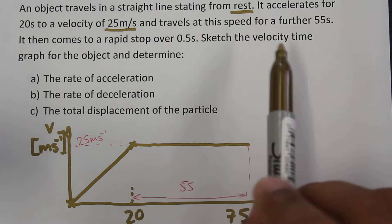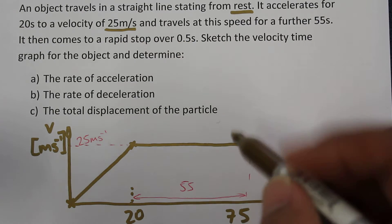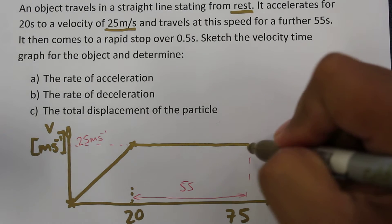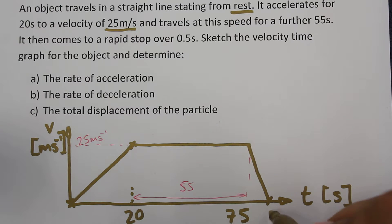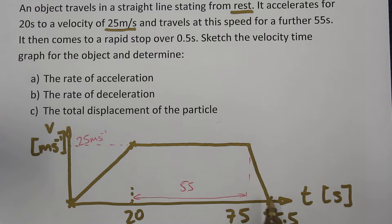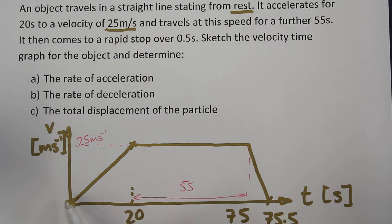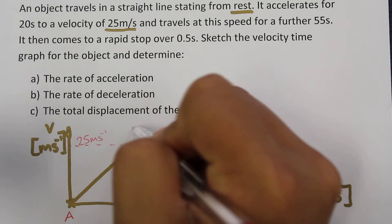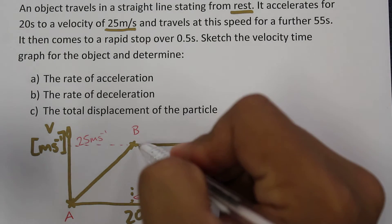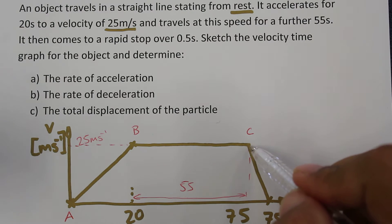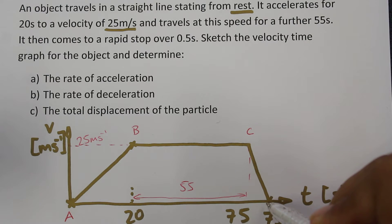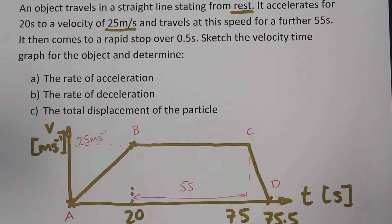After that, it comes to a rapid stop over the last 0.5 seconds. I'm going to exaggerate the scale a little bit. So 0.5 seconds later, the time is now 75.5 seconds. Now the rate of acceleration: it started from rest — we call this point A, it accelerated to point B, stays at uniform velocity until point C, and then has a reduction in velocity until it reaches zero velocity at point D.